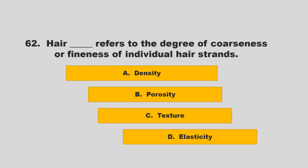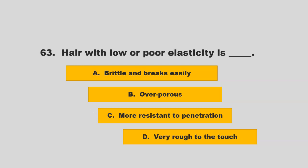Hair blank refers to the degree of coarseness or fineness of individual hair strands. Is it density, porosity, texture, or elasticity? If you chose C, texture, you are correct.